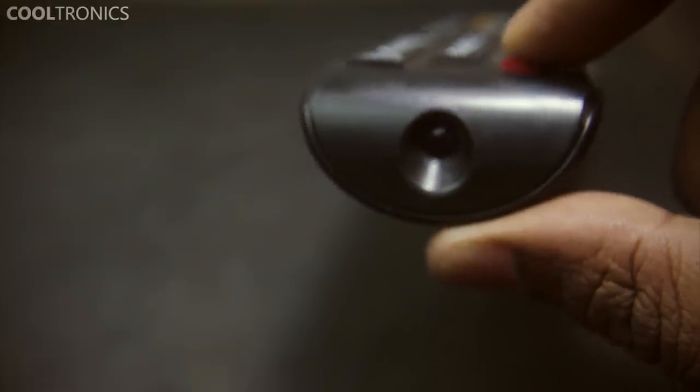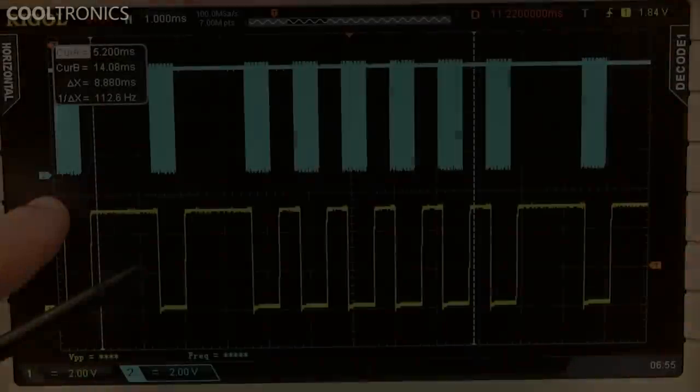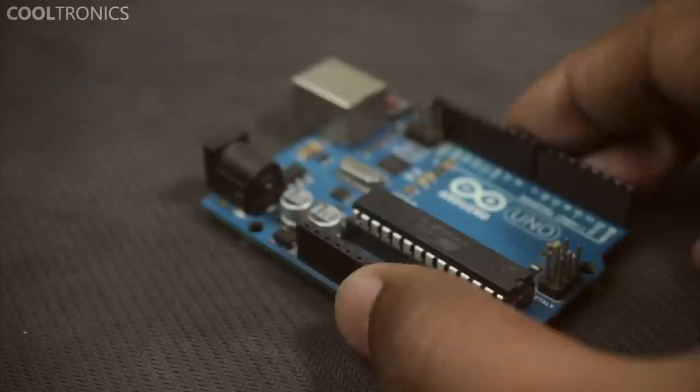When we push a button on our remote, it sends some codes through the IR transmitter. In order to send those codes, we first need to know them. For that, we're going to use an IR receiver and an Arduino.